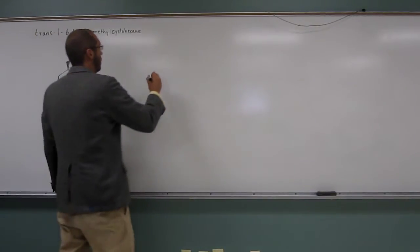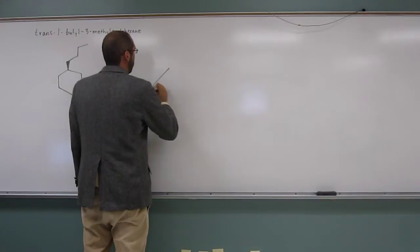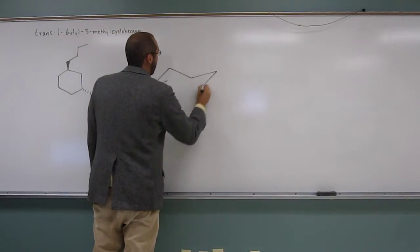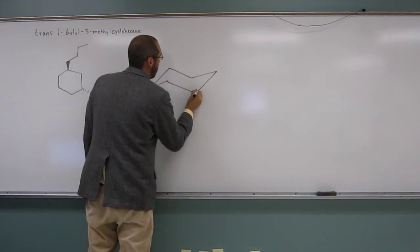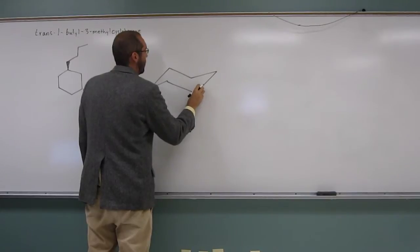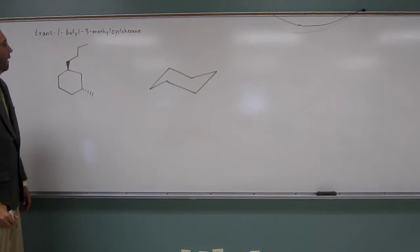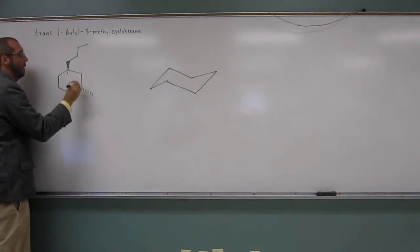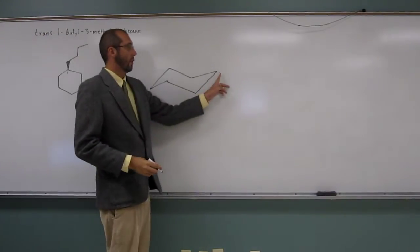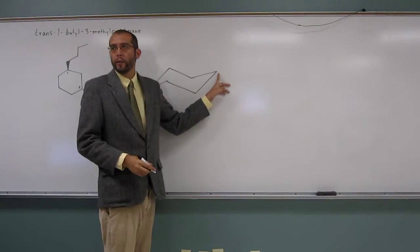Okay. Now, we're going to draw the chair structure. So, there's your cyclohexane chair. So, now, whenever these are carbons 1 and 3. So, I always like to start carbon 1 there.